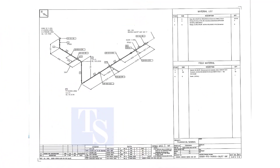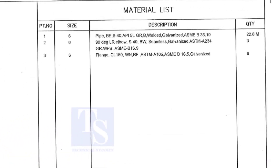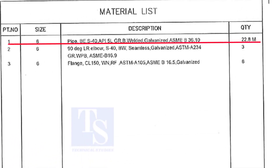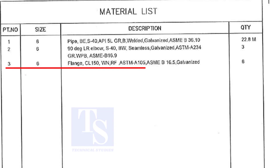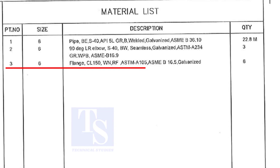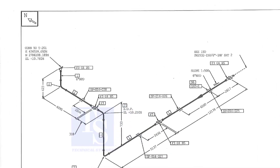This is our drawing. Let us have a quick look at the material list. Item number 1 is 6 inch pipe. BE stands for bevel end. Item number 2 is long radius elbow. Item number 3 is weld neck flange. For documents and drawings, please check the links given in the description.